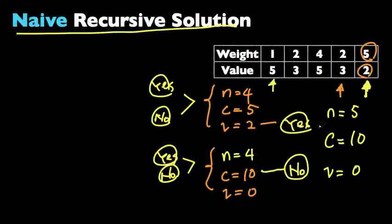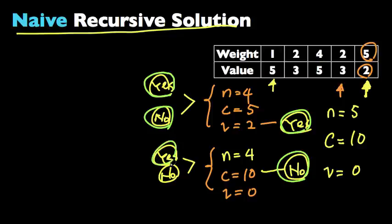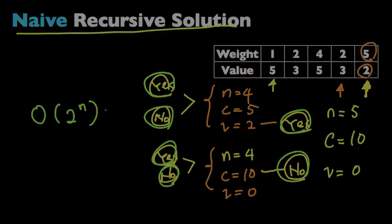This solution is very slow. In the worst case, for the last element we try yes or no, then for the second-to-last element we again try putting it in or not, and so on. We are basically trying every possible case, so the time complexity for this algorithm is exponential — which is very bad.